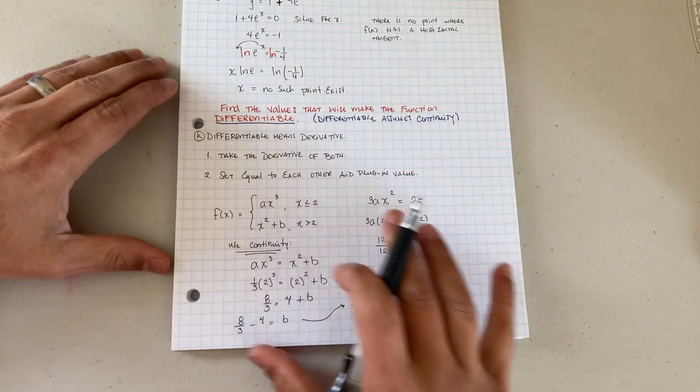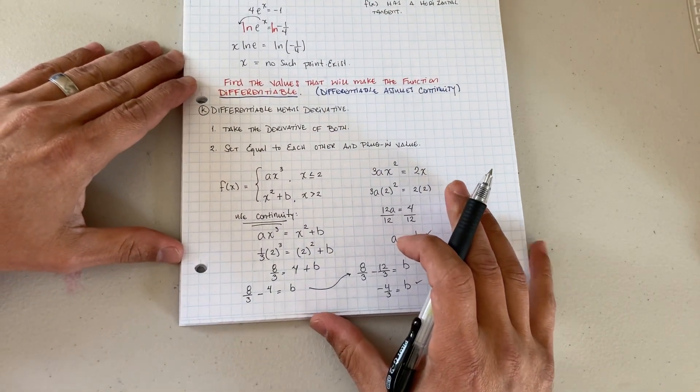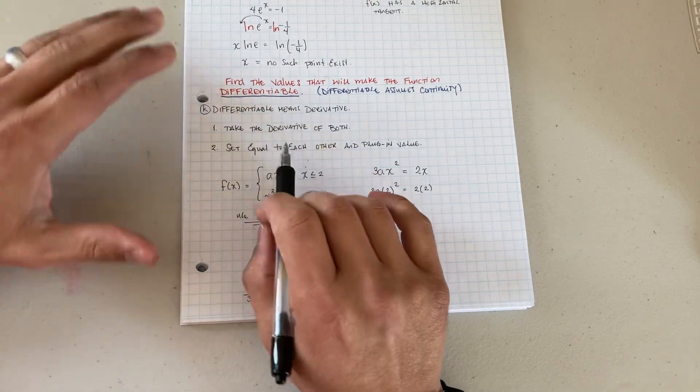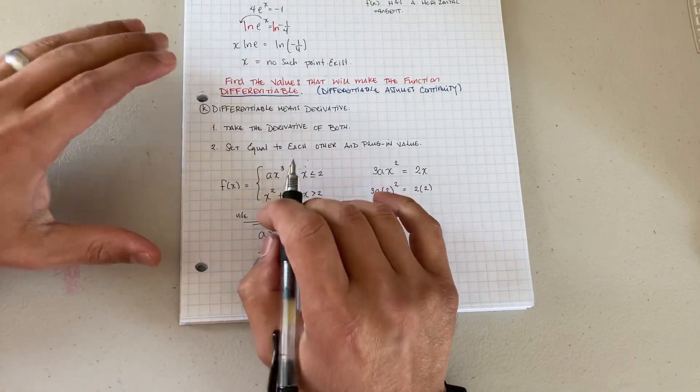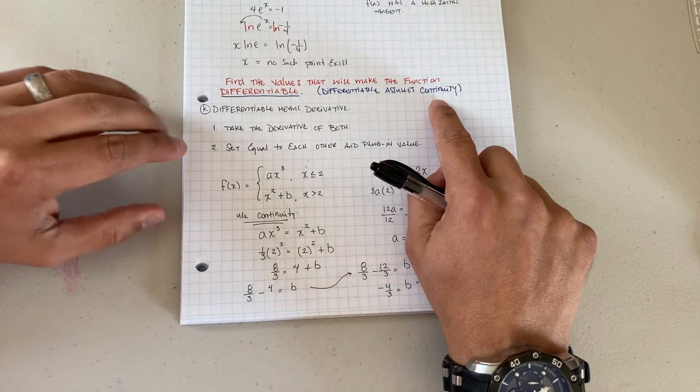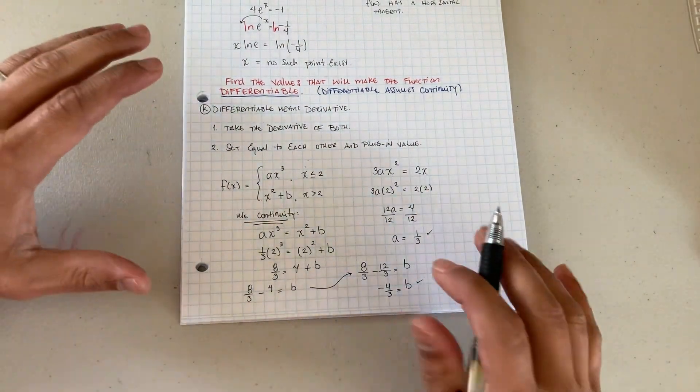I went ahead and did what I want to show you with my students here. So it says find the values that will make the function differentiable. Now remember when you're talking about differentiable, we're assuming that it's continuous. That's the first thing. So here's what you're going to go ahead and do.